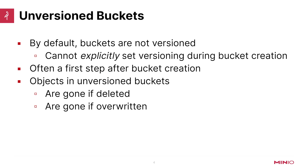When you create a bucket, by default it's not versioned, and you cannot explicitly set versioning on a bucket when you create it. But this is often going to be the first step you take after you create a bucket if you want to retain that history. Objects in an unversioned bucket are gone if they're deleted or overwritten — if you're using the same namespace, it will delete the previous object that occupied that namespace.